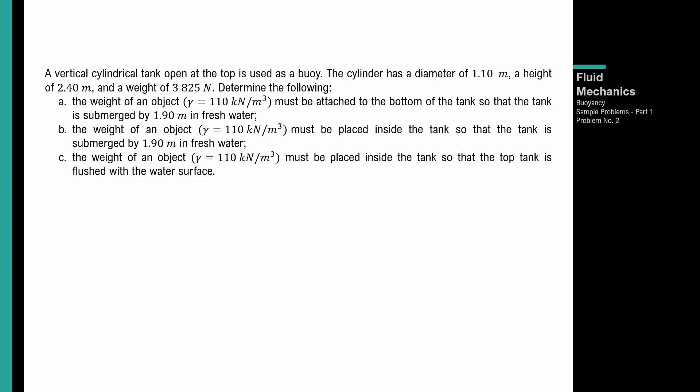Yung isa pang scenario: kapag nakalagay sa loob ng tank, ano yung weight ng object na yun na may unit weight na 110 kilonewtons per cubic meter, kapag naman lubog ng maigi — nasa flush na dun sa water surface yung top ng tank. So yung unang senaryo: given yung diameter ng tank na 1.10 meters, height ng tank na 2.4 meters, weight ng tank na 3825 N — hahanapin yung weight ng object na naka-attach sa bottom ng tank para maging submerged ng 1.9 meters in fresh water.